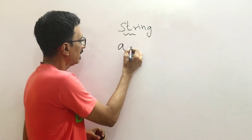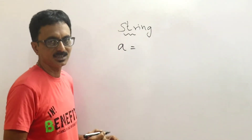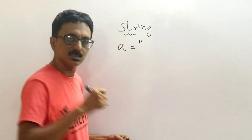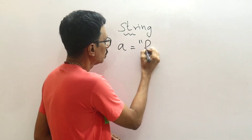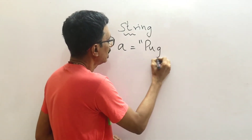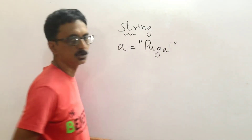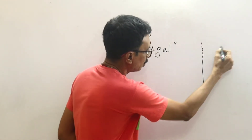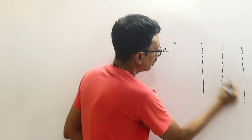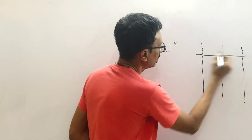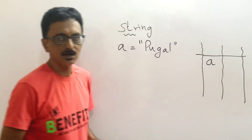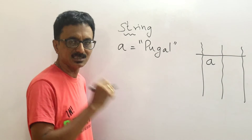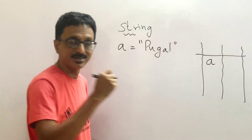For example, 'a' is equal to... If you want to use a string, you use double quotations or single quotations to assign the string value.